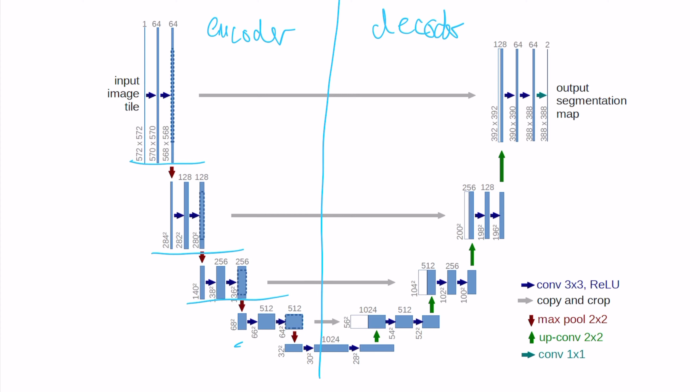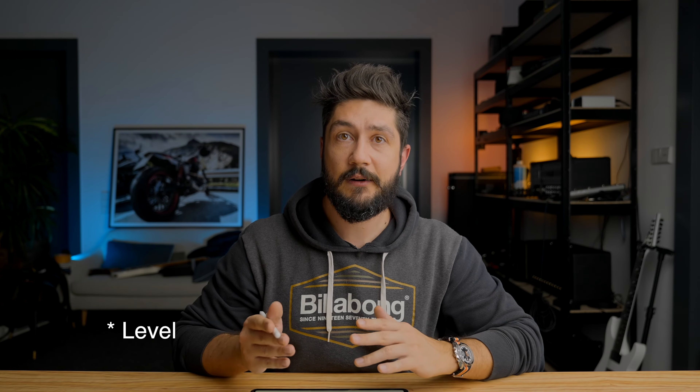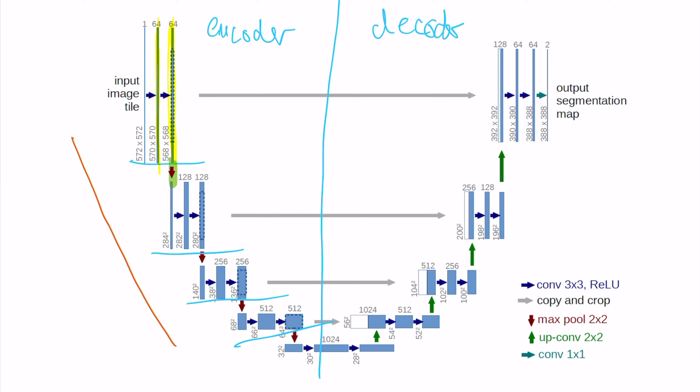You can think of the architecture in terms of levels. Every level consists of two 3x3 convolutional layers, each followed by a ReLU activation unit. The transition between levels is handled by a 2x2 max pooling unit with a stride of 2 for downsampling, which reduces the size of the input to the next level. With every level going toward the bottom of the U-shape, the size of the input halves but the number of channels doubles, allowing the network to learn more complex relationships. By the time we reach the bottom of the U-shape, the model knows the 'what' of the image fairly well.